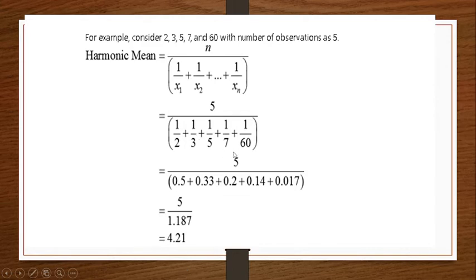Then students, write this 5 here. 1 by 2 is 0.5, 1 by 3 is 0.33. All this calculation you do here. Then 5 divided by this, you have to add, it will be 1.187.